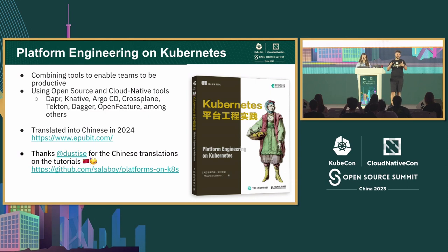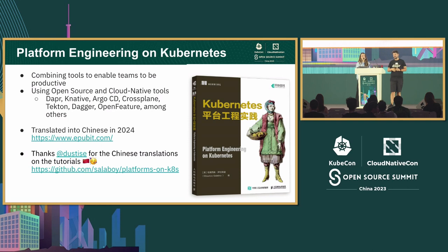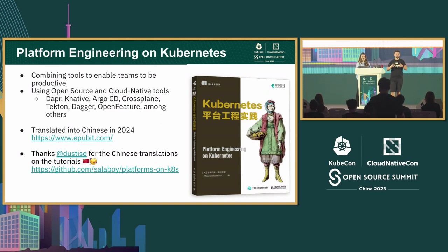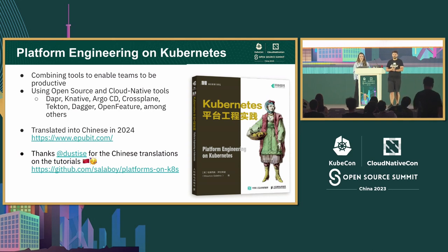This book takes you into a platform-building journey. It's focused mostly on developers — not data scientists and machine learning — but mostly about development. It covers a bunch of different CNCF tools like Dapr, Knative, Argo, Crossplane, and Tekton, and how you combine them together to actually build a platform on top of Kubernetes.